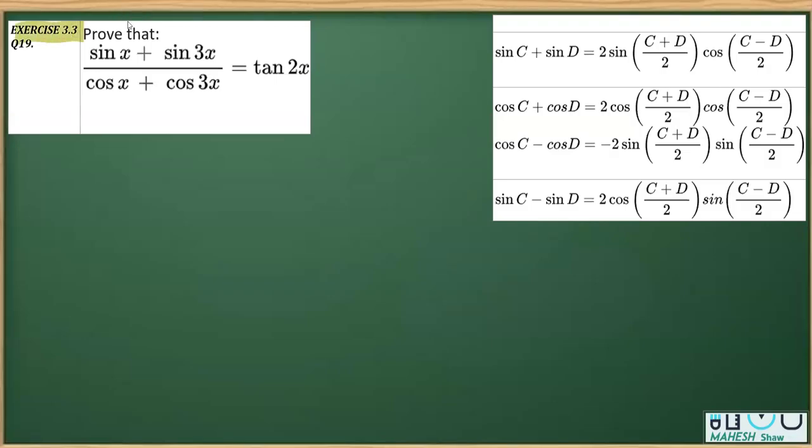Now I'm on question number 19 from exercise 3.3, book 3 new book. In this question we have to prove that sine x plus sine 3x over cos x plus cos 3x is equal to tan 2x. This question is based on C and D. First we'll be applying sine C plus D in the numerator and cos C plus D in the denominator.